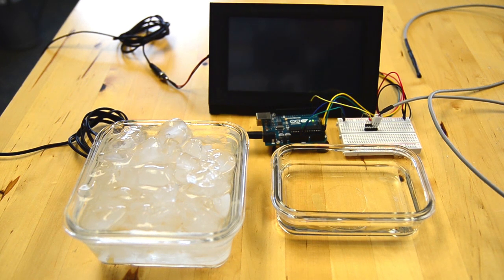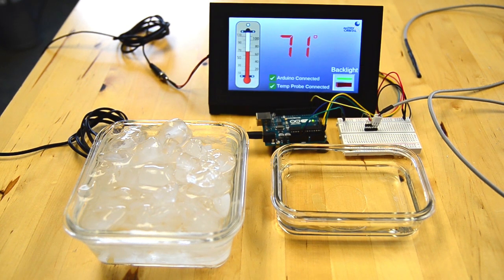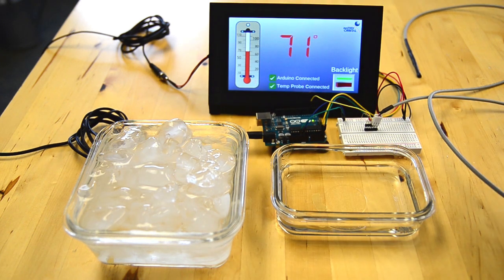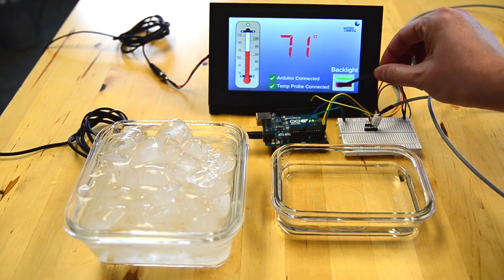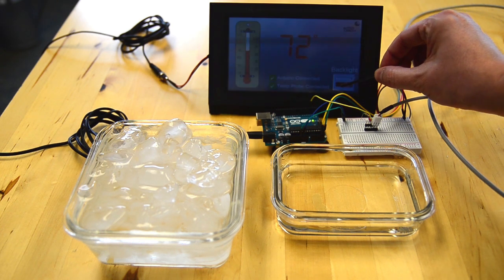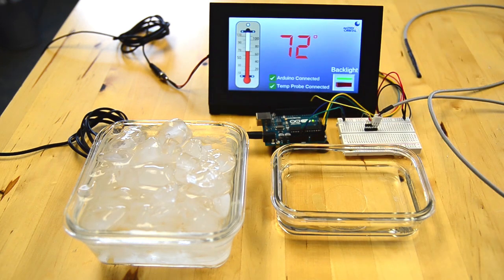I'm going to reset the Uno. Display boots up. There we go. As you can see, the Arduino is connected and the temperature probe is connected. We're just going to double check that the display is alive by toggling the backlight on and off. There we go. So everything's alive.